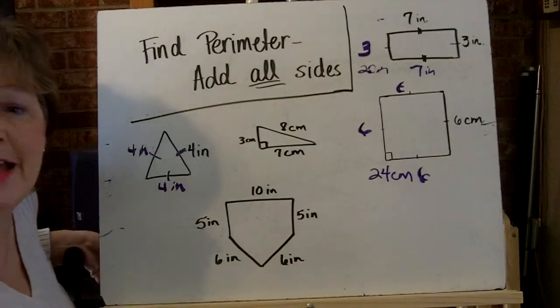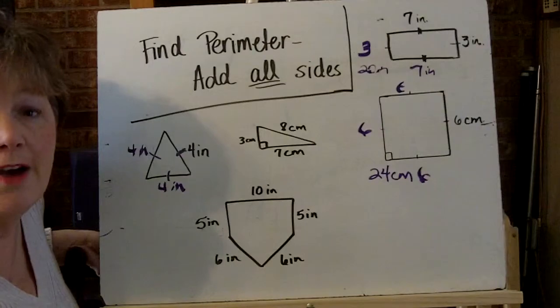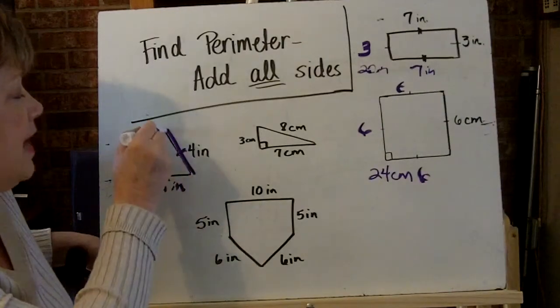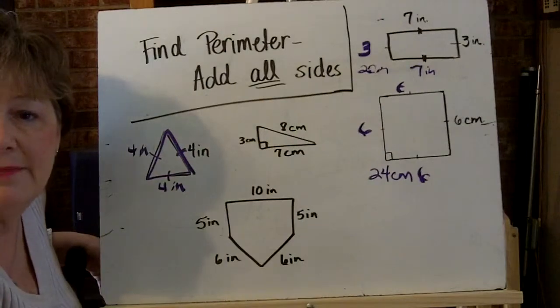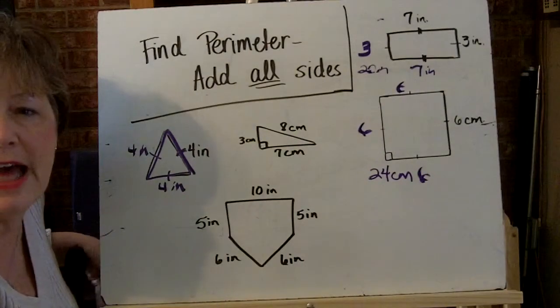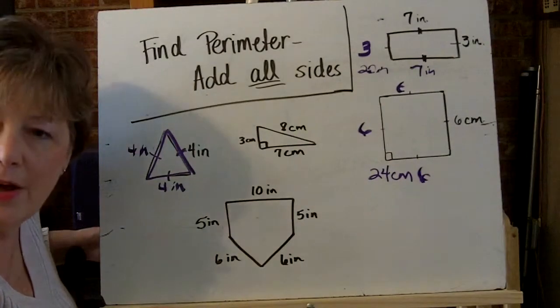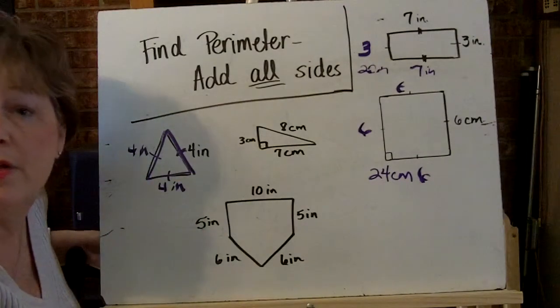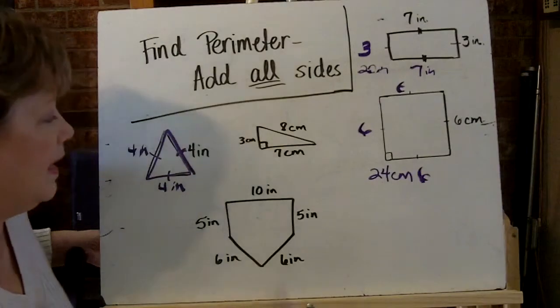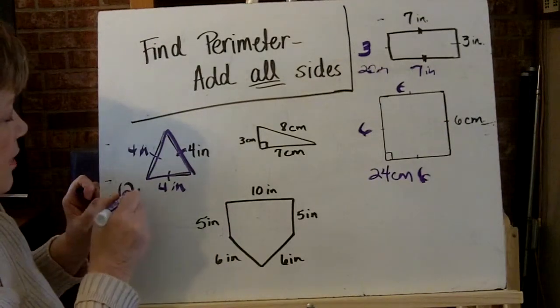So to find the perimeter of this triangle, the outside edge, I simply add all the sides no matter how many sides that polygon has. So 4 plus 4 plus 4 or 3 times 4 equals 12 inches.